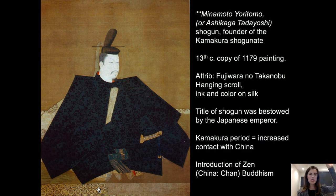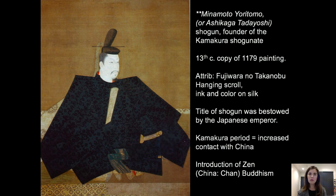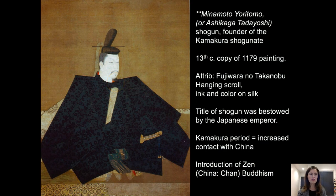The subject wears a very distinct boxy, inflated dress that gives him a great presence, filling the composition. Even in austere black, there's richness in the textile with wonderful detail on the garment. You can also see interest in pattern, a pointed black cap, and the subject looks rather young. He holds a ceremonial board called a shaku, and the hilt of his sword reminds us of his military prowess.